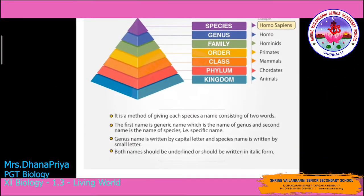Now let us discuss the taxonomy hierarchy of humans — Homo sapiens. Taxonomy deals with the kingdom, phylum, class, order, family, genus, and species. For humans: kingdom Animalia, phylum Chordata, class Mammalia, order Primates, family Hominidae, genus Homo, and species sapiens. Together, this gives us Homo sapiens. Each species is thus given a name consisting of two words.